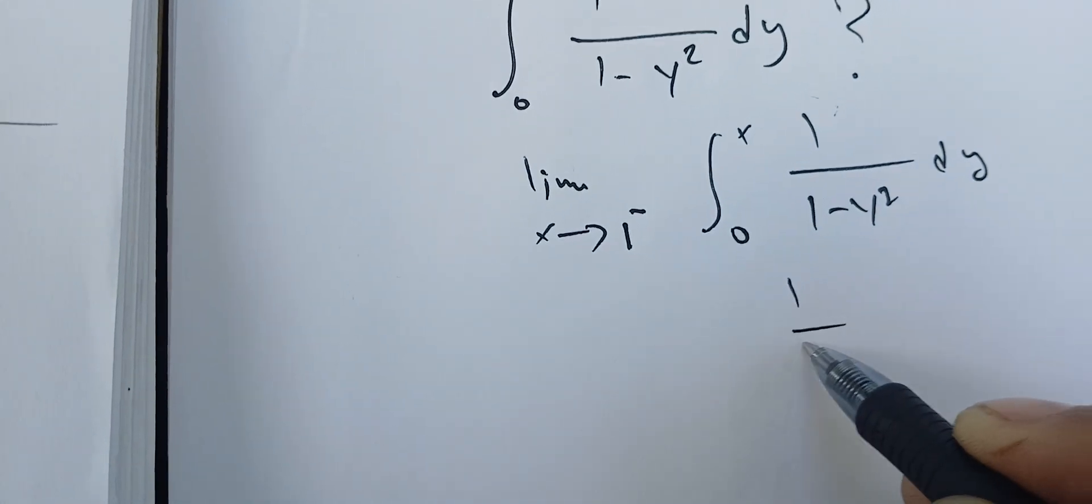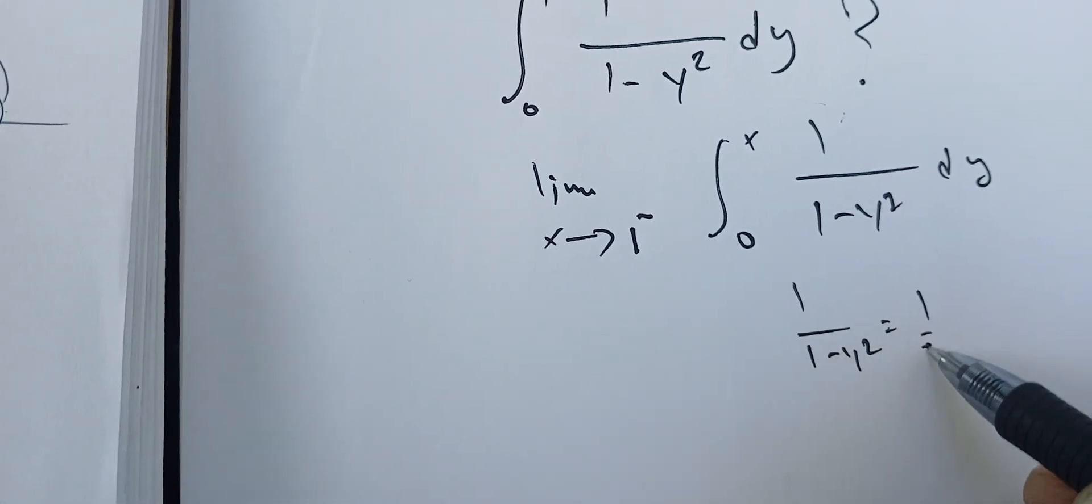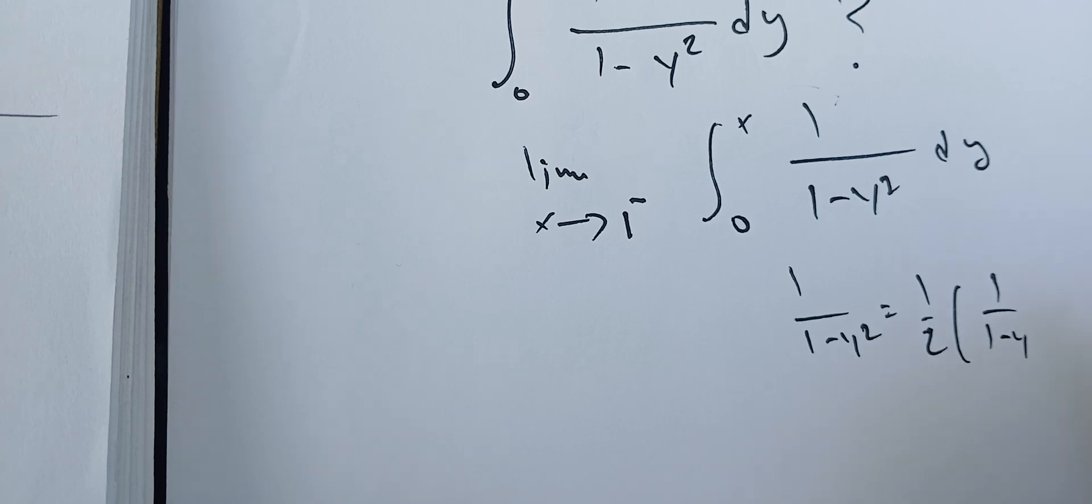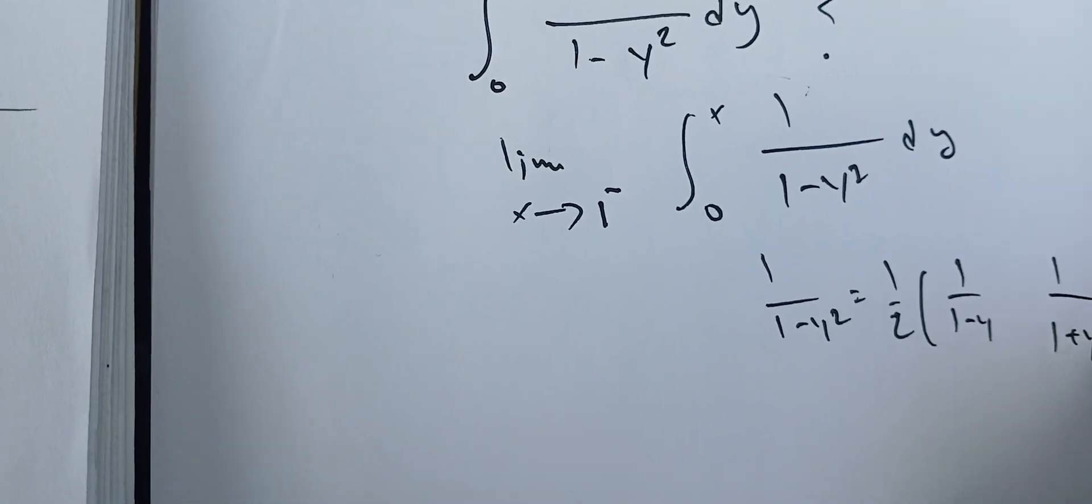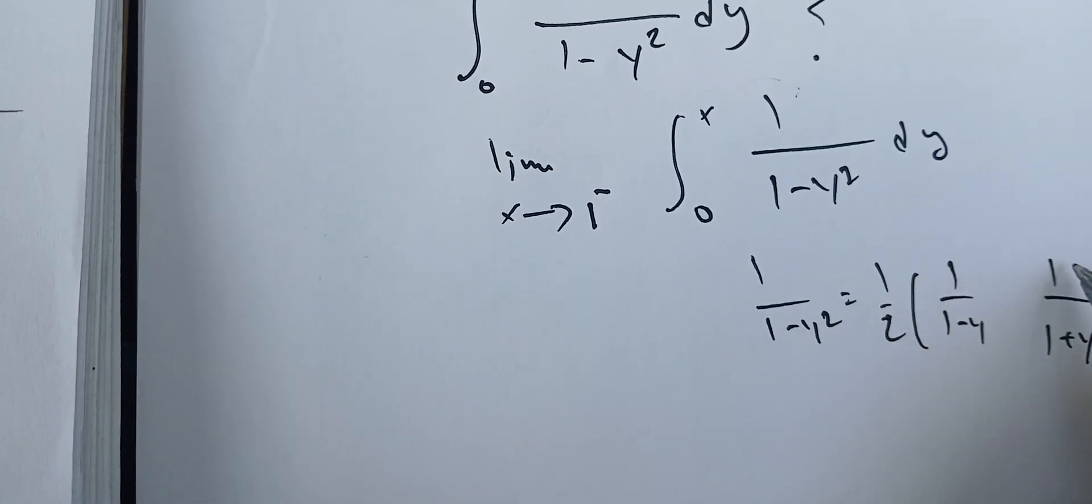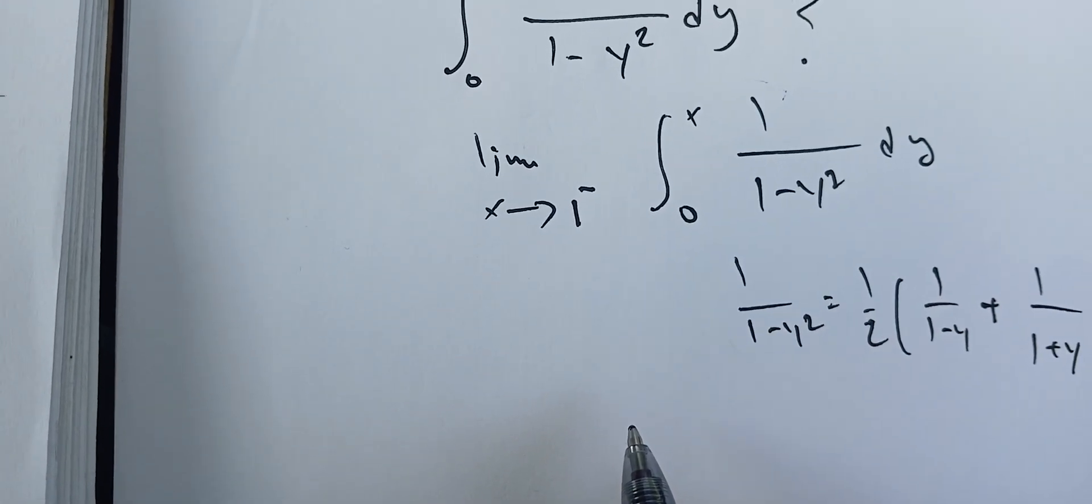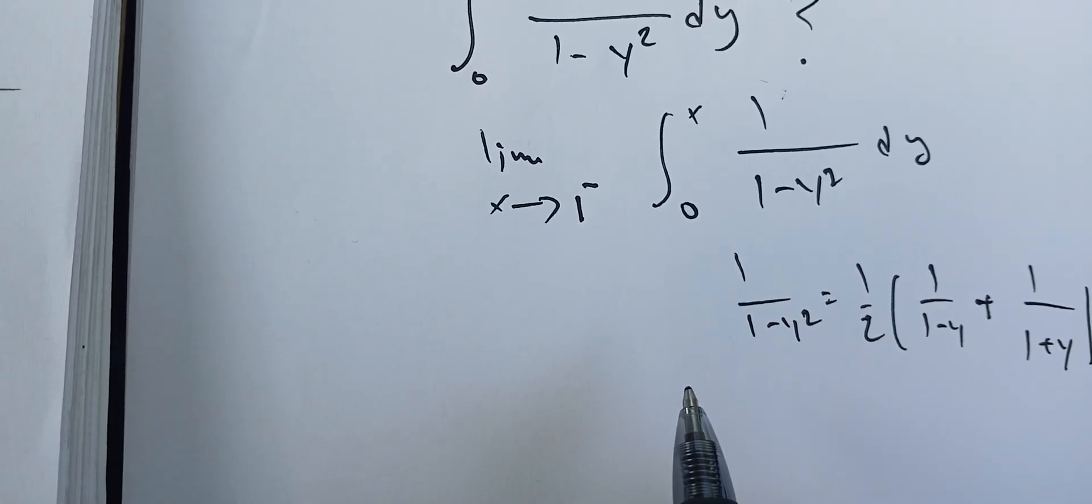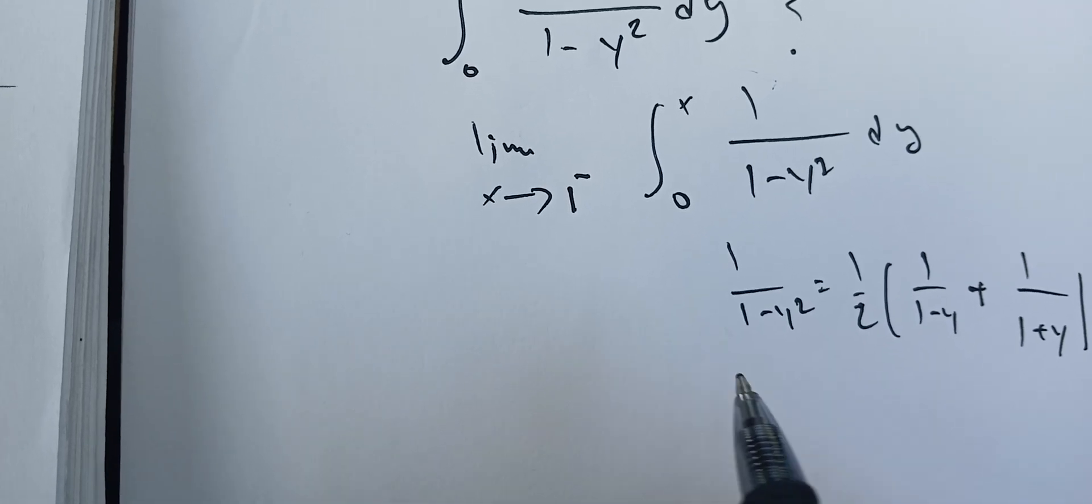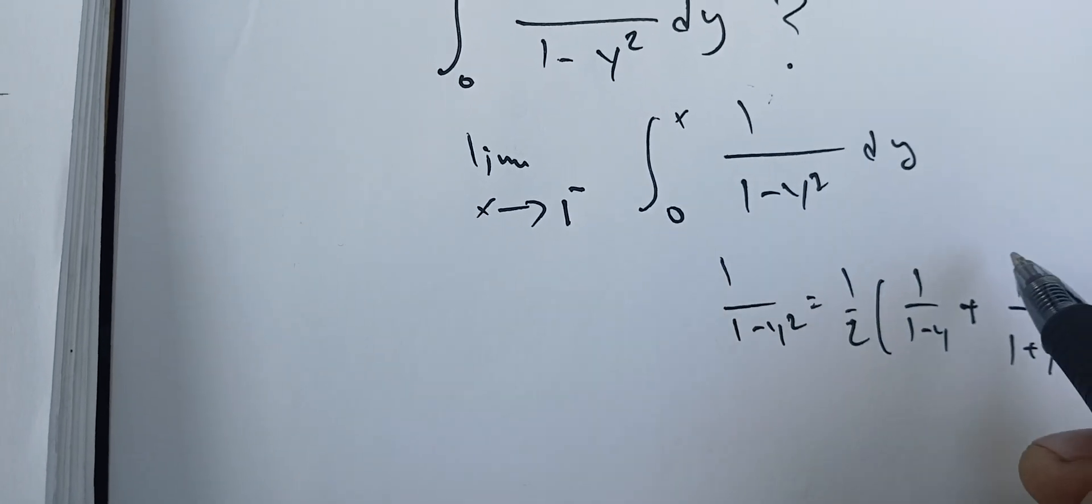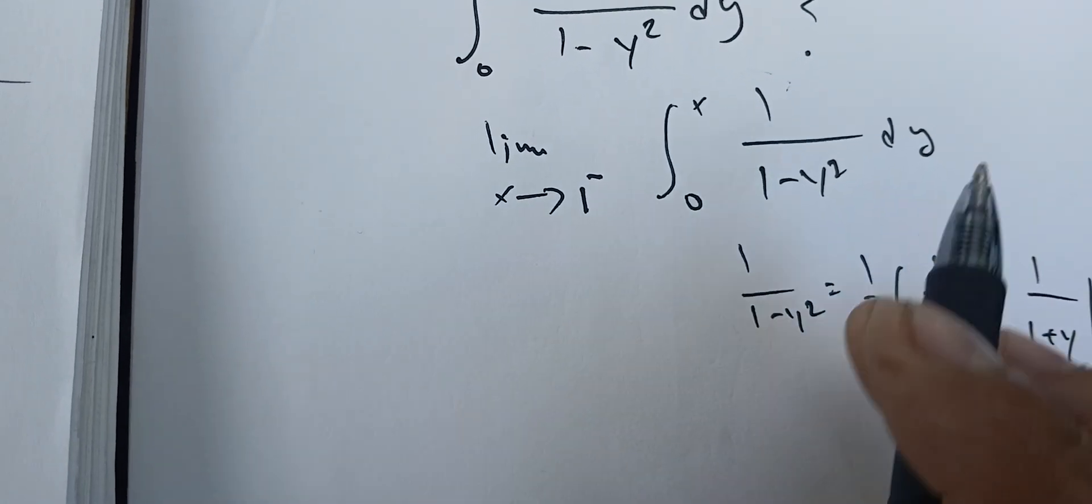We have one key idea: this one is a fraction that we can decompose very quickly using partial fractions. So 1 over 1 minus y squared, let's see if it's a minus or plus. So it's a plus. That's one of the ideas here.